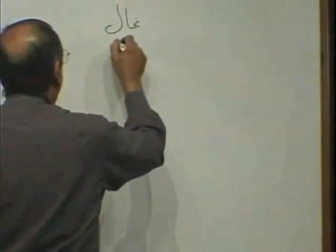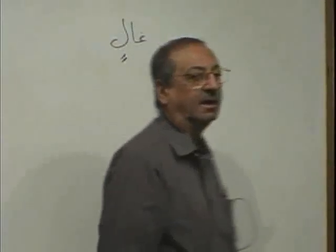Now we come to our main lesson. We left it at Exercise 11, page number 10. Now brothers and sisters, here is a noun here — Ghalin. What is it? From the looks of it, it is Majroor. Isn't it Majroor?